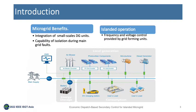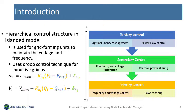The microgrid is an essential element of today's power system due to its ability to integrate small-scale DG units and be islanded during main grid faults. However, during islanded mode, the frequency and voltage need to be controlled by the DG units. Microgrids employ grid-forming units that collaborate to maintain frequency and voltage using droop control equations in a hierarchical control structure.